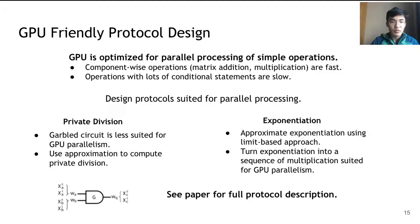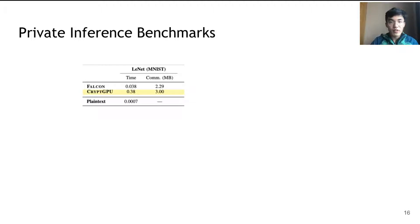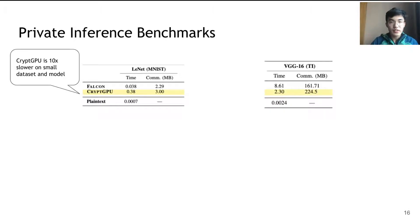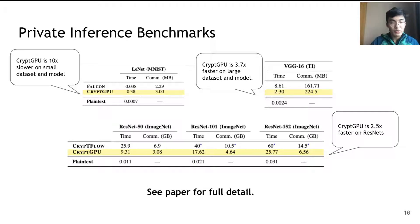For detailed description of our protocols, please refer to our paper. We performed a systematic evaluation comparing our system with prior work. For private inference, comparing with Falcon and CryptFlow: on small datasets and models where communication is the bottleneck, GPU acceleration does not bring much benefit and our system is slower than Falcon on LeNet and MNIST. However, as we scale to larger models and datasets, we see the advantage of GPU acceleration—a 3.7x improvement on VGG16 on Tiny ImageNet and a 2.5x improvement on ResNet compared to CryptFlow.